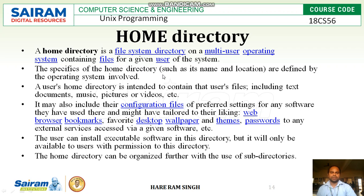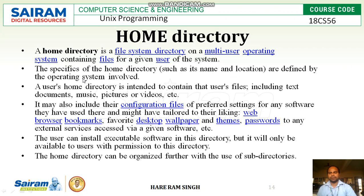The next topic is the home directory. As discussed, every user working in the Unix operating system must be present in some directory. The directory in which the user is present is called the home directory. A home directory is a directory on a multi-user operating system containing files for a given user of the system. The specifics of the home directory — its name and location — are defined by the operating system involved.